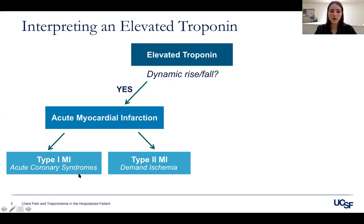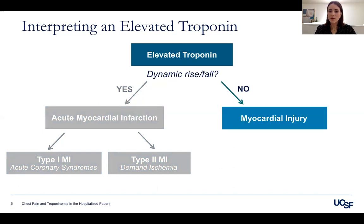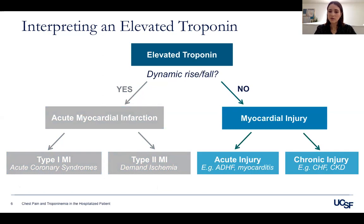Type 1 MI is acute coronary syndrome — what we usually think of as heart attacks. Type 2 MI is demand ischemia. If you have an elevated troponin that's not dynamically changing, this is suggestive of myocardial injury without true infarction. This can happen acutely — patients with acute decompensated heart failure or myocarditis, for example, may have markedly elevated troponin that's not significantly changing. Some patients will also have a chronically elevated troponin, such as those with CHF or CKD.